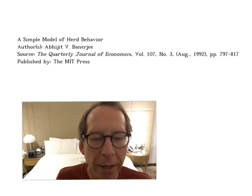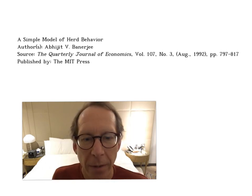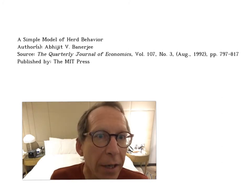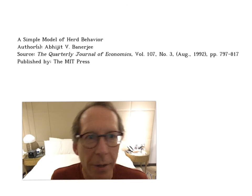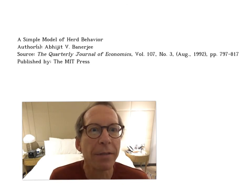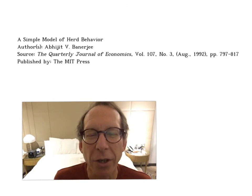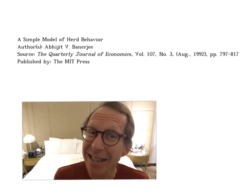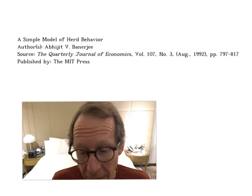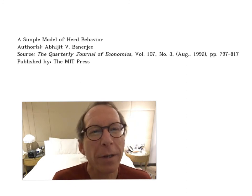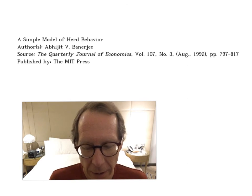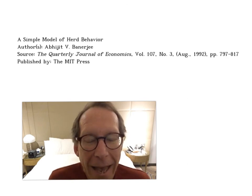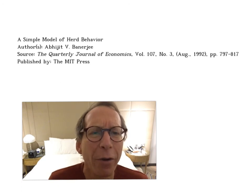Information cascades and herding are important economic phenomena that relate to imperfect information. Examples are often given in share markets or financial markets, where all investors go after the same stock — everybody invests in Tesla because everybody else is investing in Tesla, even though the private information of many of those investors may say it's not the best company to invest in. Or think about managers, who will often make similar choices to other managers. And of course, panic buying and hoarding is a classic example of herd behaviour.